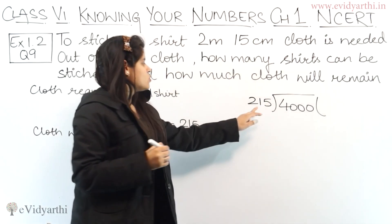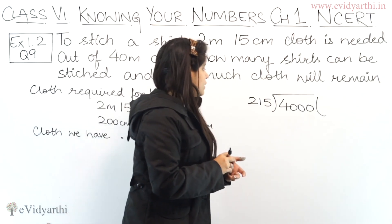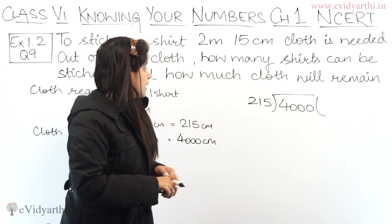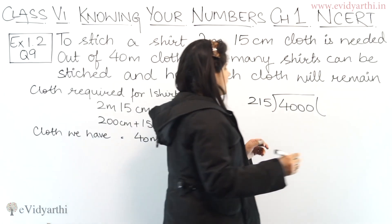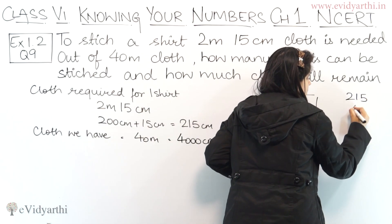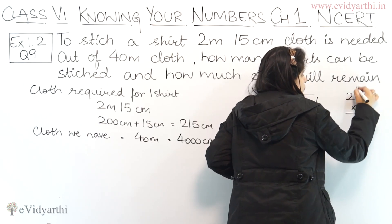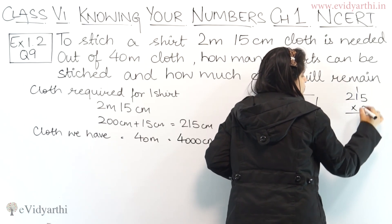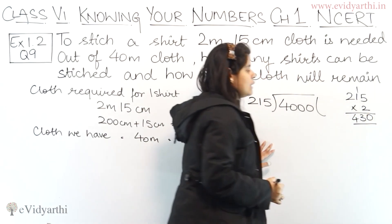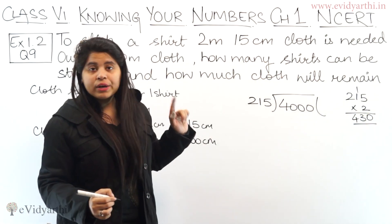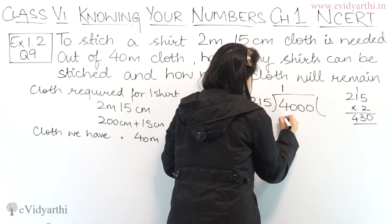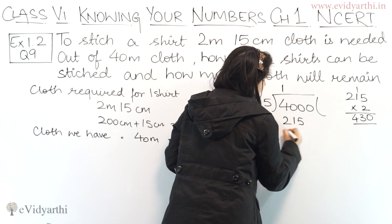So, 4000 divided by 215. First of all, we take 400 — 215 multiplied by 2: 2 into 5 is 10, 2 into 1 is 2 plus 1 is 3, 2 into 2 is 4. So 430 is greater than 400, which means we go with 1. So 215 into 1 is 215.